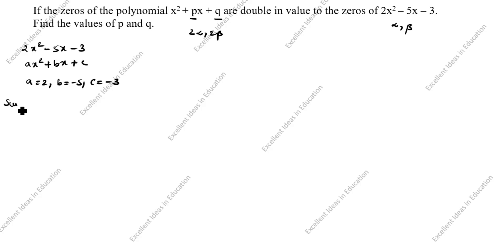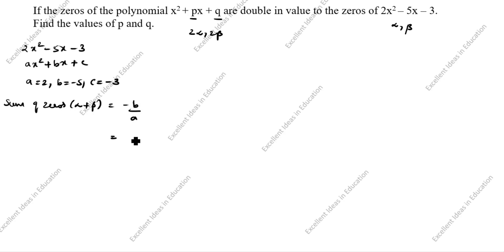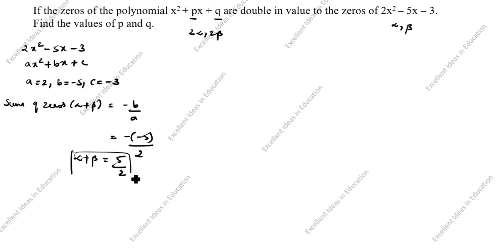What is the sum of zeros? Sum of zeros: alpha plus beta is equal to minus b by a. b is minus 5, so minus of minus 5 divided by 2. Therefore alpha plus beta is equal to 5 by 2.